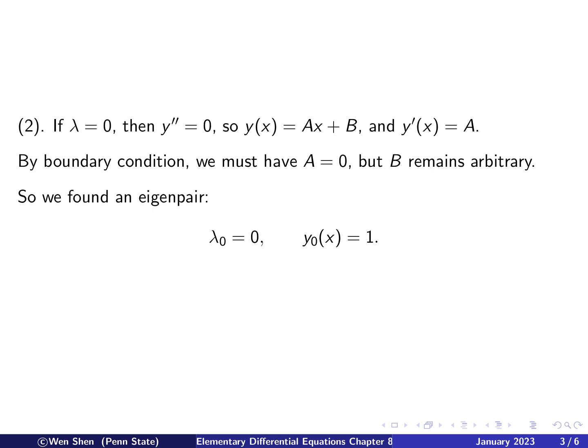Okay, let's consider the second case, where lambda equals 0. Then the equation simply becomes y double derivative equals 0. So the function shall be a linear function, we can write it as ax plus b. And then the derivative y prime would be just a, so it will be the slope of the function.